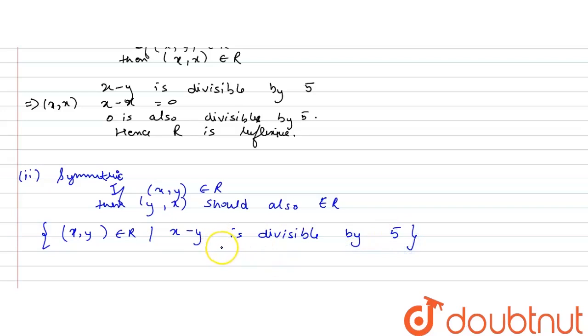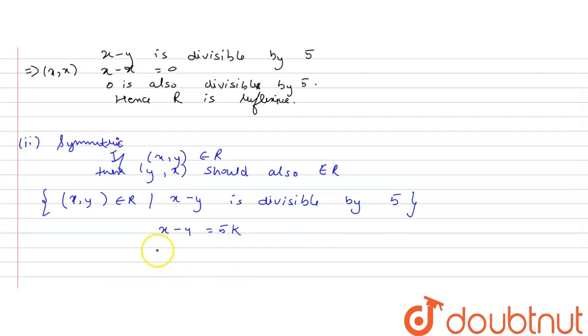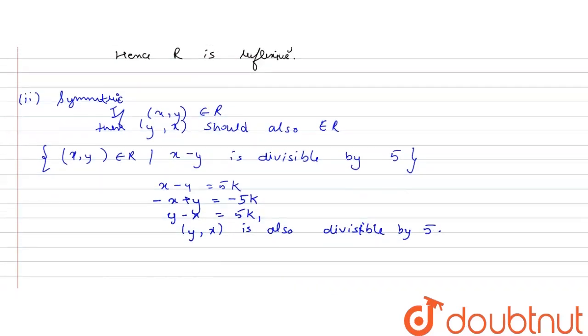So, for the relation to be symmetric, let us consider x minus y equals 5k. Now, if we replace x,y by y,x or let us replace it here as minus x plus y equals minus 5k. So, y minus x equals 5k₁. So, (y,x) is also divisible by 5. Hence, the relation R is symmetric.